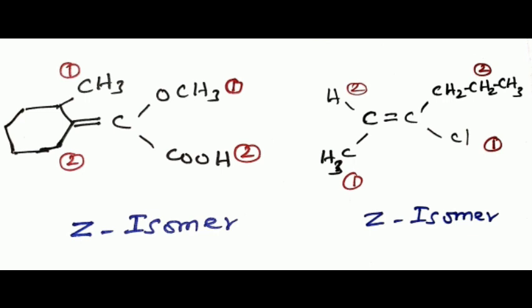In the first compound, one carbon of the double bond has a methoxy group and an acid group. OCH3 has higher priority than COOH. The second carbon has two ring residues, one of these residues has higher priority over the other. The compound therefore represents the Z isomer. Similarly, this is also the Z isomer.